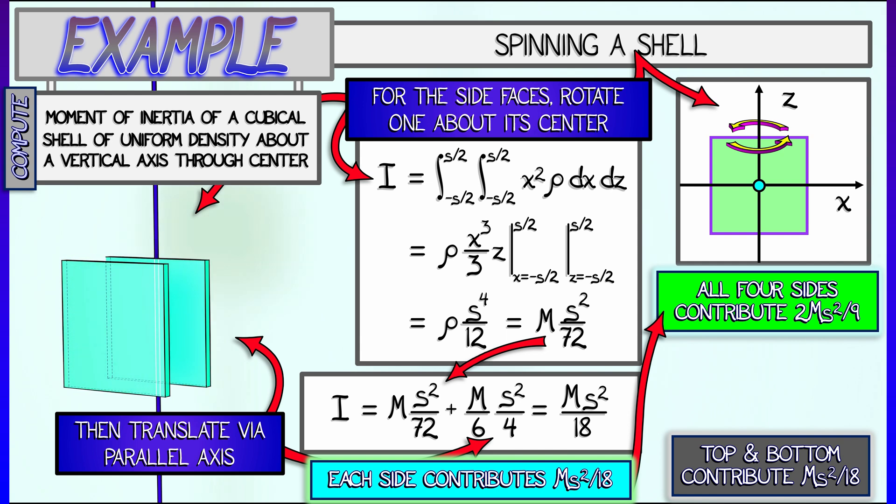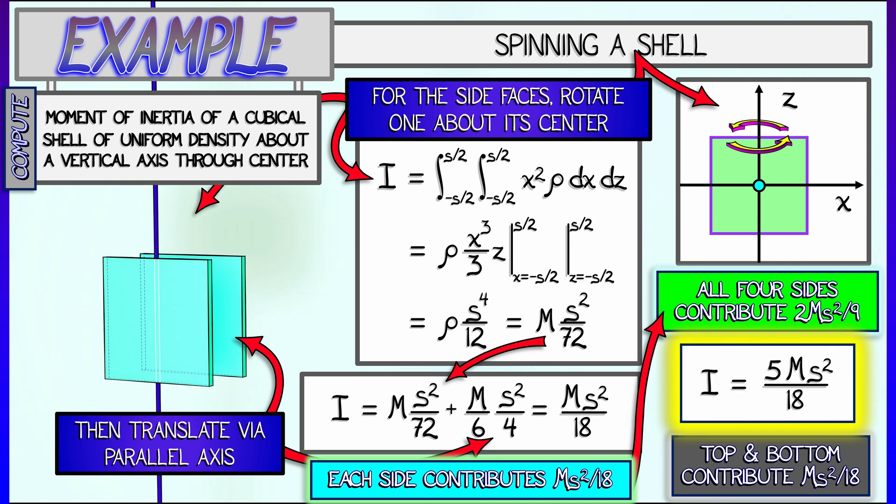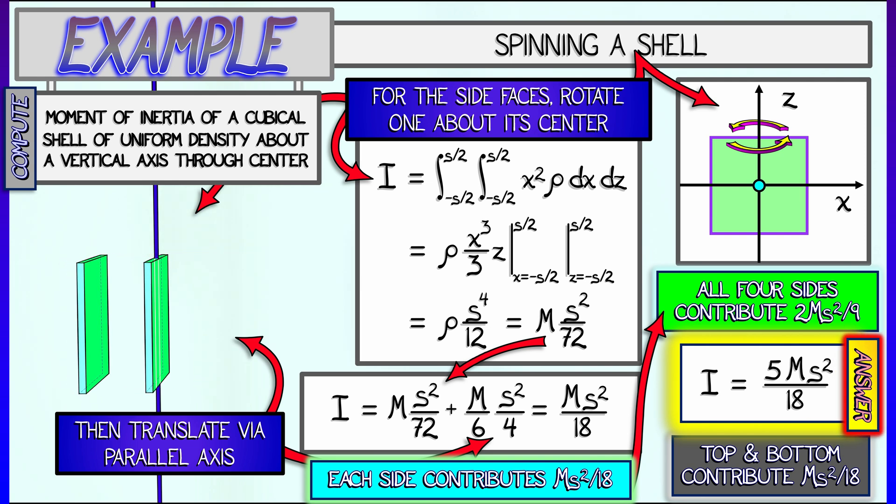Combining that with the top and the bottom contributions to moment of inertia gives us a final answer of 5/18 ms squared for the moment of inertia. That's kind of cool. It's not obvious. It's totally doable, breaking this object into simple parts and using basic integrals and the parallel axis theorem. This is a good template for other examples.